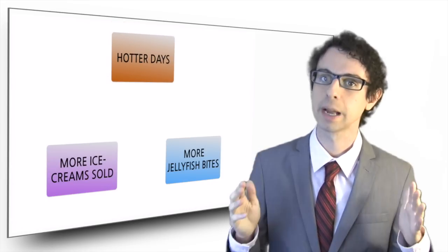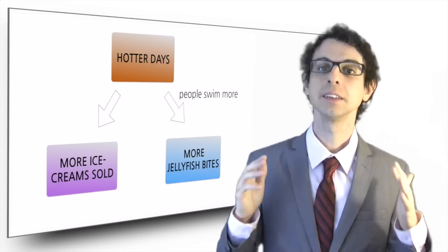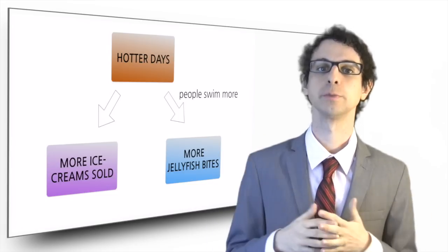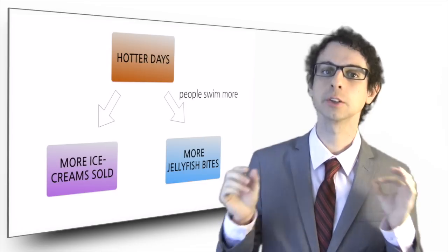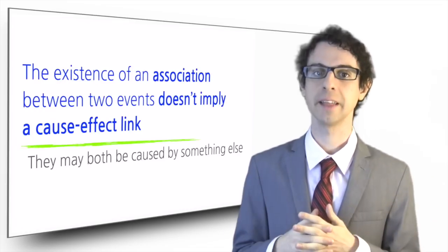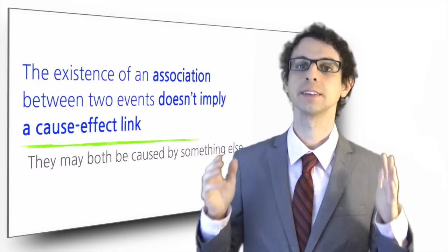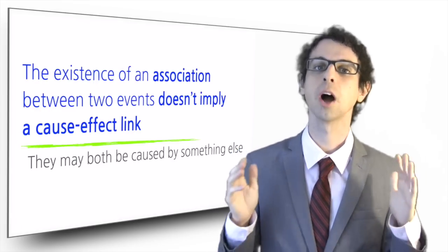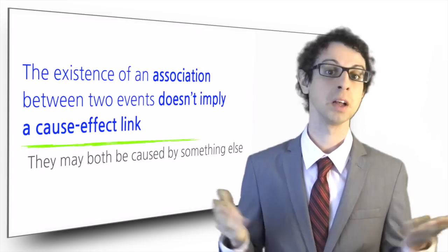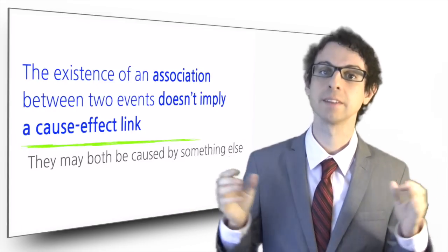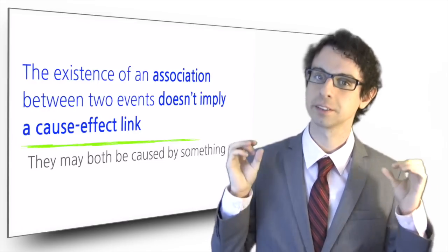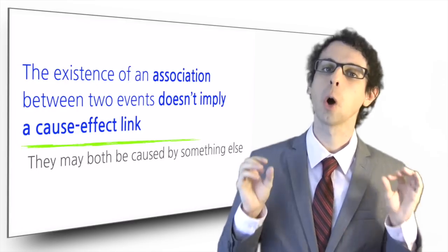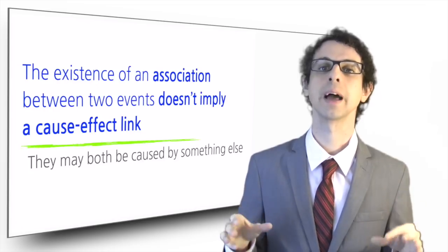In harder days, people buy more ice creams to alleviate the heat, and for the same reason, they also take more baths or spend more time in the ocean. Because they bathe more, the odds of being bitten by a jellyfish are increased. The fact that the two events occur together does not imply that one causes the other. In Greece, researchers observed that there is a very high consumption of olive oil and a very low incidence of cardiovascular disease. Does this prove that olive oil prevents cardiovascular disease? Not necessarily. Maybe they use a lot of olive oil because they have a lot of olives because there is a lot of sun, and because there is a lot of sun, they make a lot of vitamin D in their skin, which protects them from cardiovascular disease. So always remember, association does not imply causation.